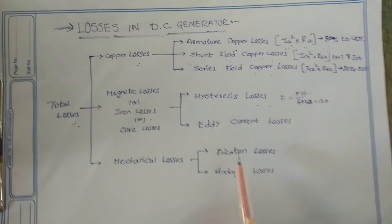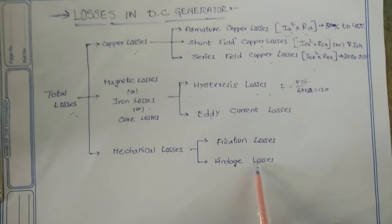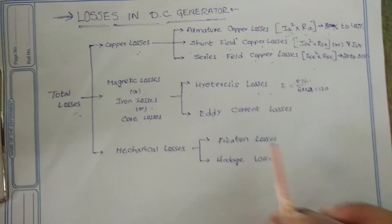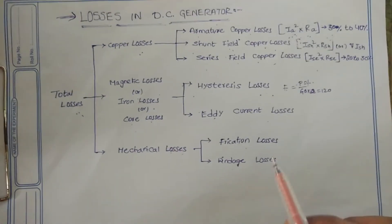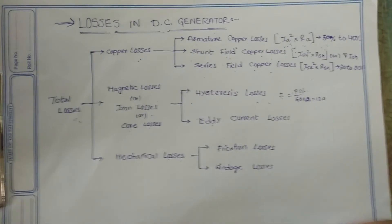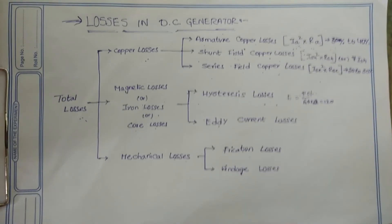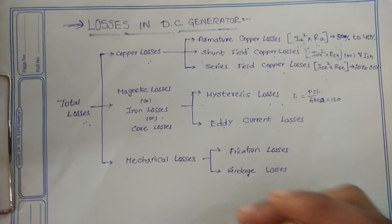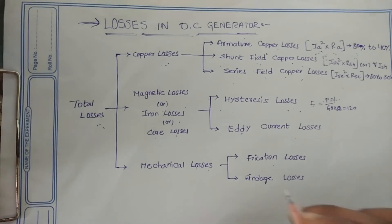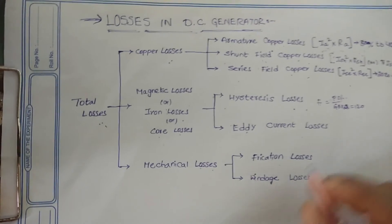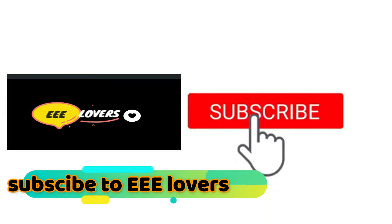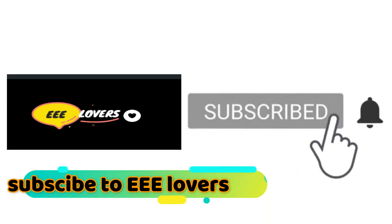Mechanical losses are divided into frictional losses and windage losses. Frictional losses occur at the bearings and the commutator segments. Windage losses are due to the rotation of the armature in air.